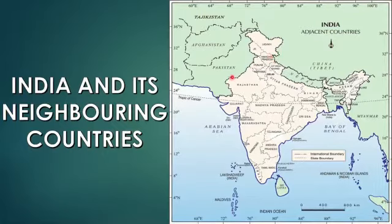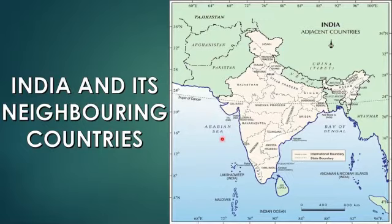So we have seven land borders: Pakistan, Afghanistan, Nepal, China, Bhutan, Bangladesh, and Myanmar. And we also have neighbors across the sea — Sri Lanka and Maldives.